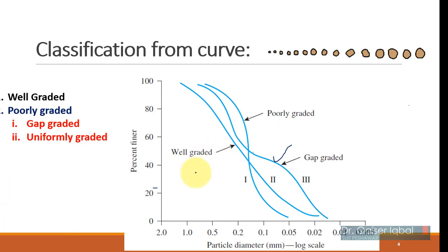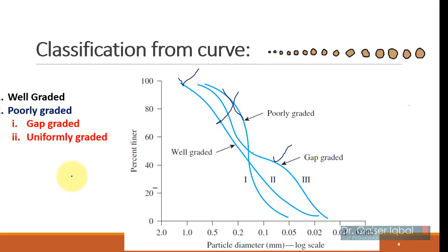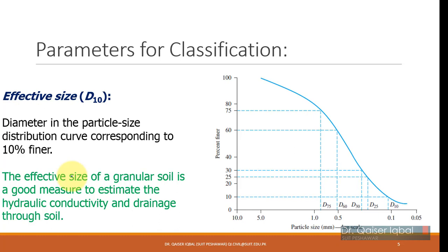When placing soil for embankments, dams, buildings, or retaining walls, you want the size to always be well-graded. Poorly-graded soil — whether gap graded or uniformly graded — is usually not desirable. These soil types can be identified using the particle size distribution curve, which shows whether the soil is poorly graded or well graded.